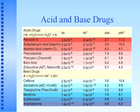On the other end of the spectrum, drugs considered to be basic include caffeine, theophylline, morphine, erythromycin, and amphetamines. Some of you may be familiar with the concept of Ka and Kb, and we're going to spend some time talking about that in this podcast.